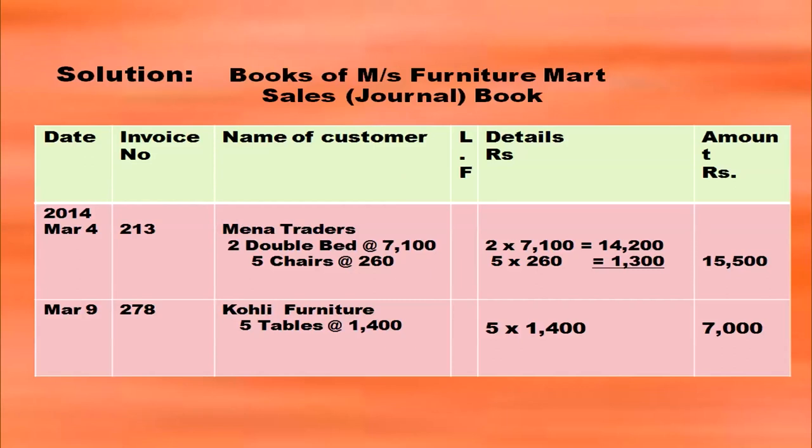On March 9th, one more transaction — write the invoice number from the question. Name of the customer is Kohli Furniture. Messrs Furniture Mart sold five tables at Rs. 1,400 to Kohli Furniture. So 5 × 1,400 = 7,000 as the net amount in the amount column.